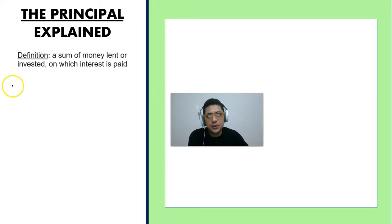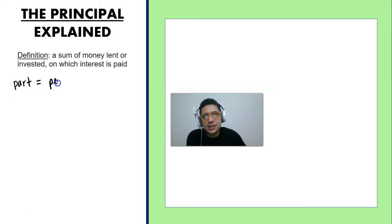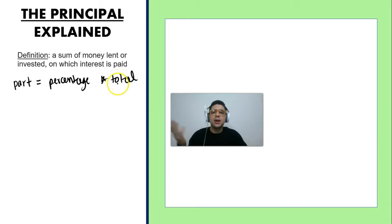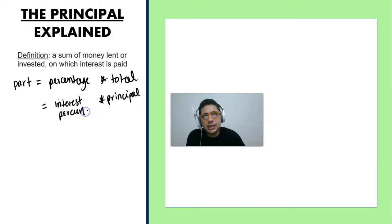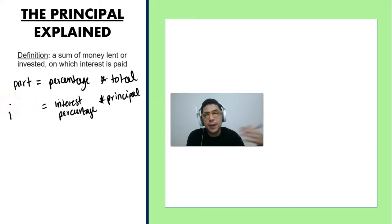Let's try solving a problem. To solve these problems we're going to be using the percentage formula, which is: the part is equal to the percentage multiplied by the total amount. When we're talking about principals, the total amount is going to be the principal, and the percentage is the interest rate.